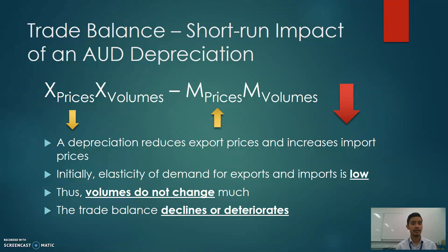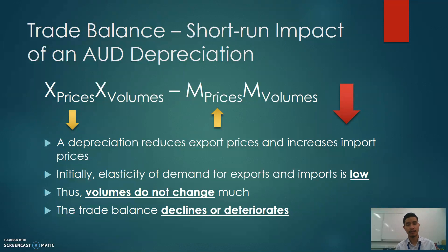Specifically, the export term — export prices multiplied by export volumes — declines because of the fall in export prices, while the import term — import prices multiplied by import volumes — becomes increasingly negative because of the rise in import prices. Both effects lower the trade balance overall.